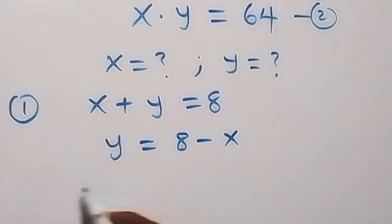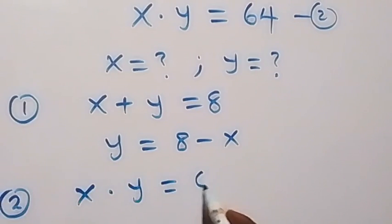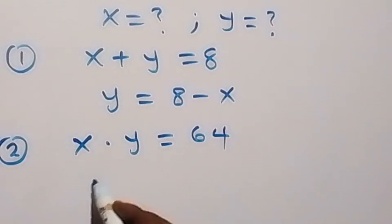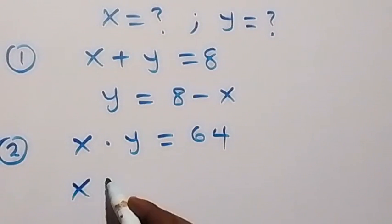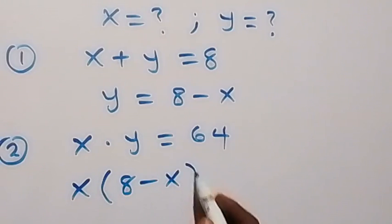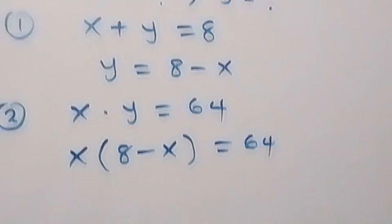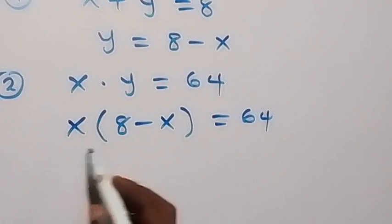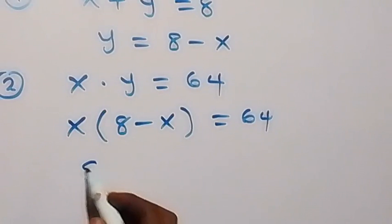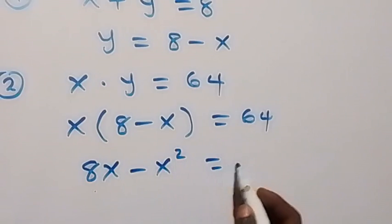We can now substitute this into equation 2, which is x times y equals to 64. This now becomes x times (8 minus x), which is equal to 64.